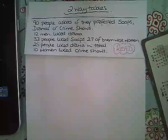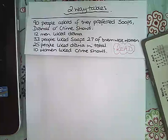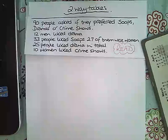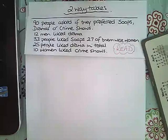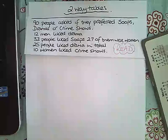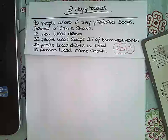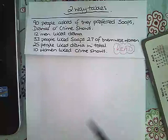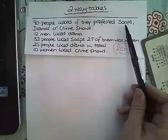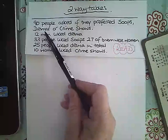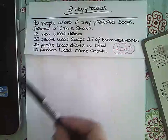Welcome to the second part of Two-Way Tables. This is the sort of question where you might be asked to actually construct your own two-way table, so I'm going to show you how to do that. The first and most important thing is that you read through the whole question so you can work out the categories you need to include. We have three categories of television show: soaps, dramas or crime shows, and we have men and women.